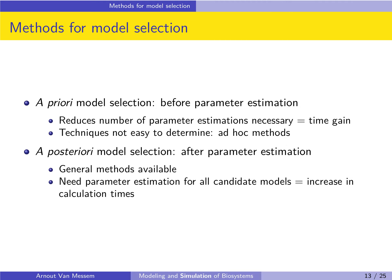A priori model selection — model selection before parameter estimation — uses ad hoc methods. We look at the data and try to see if we get some information from it, looking for visual indications of which models might be suitable. This way we can reduce the number of parameter estimations necessary, leading to a time gain.